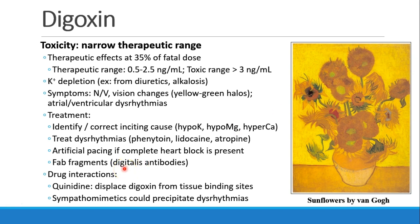If patients have digoxin toxicity, the first thing to identify is why. Are they hypokalemic, hypomagnesemic, hypercalcemic? Treat the dysrhythmias with an appropriate antiarrhythmic, whether it's phenytoin or lidocaine or atropine. They may need to be paced if they have complete heart block, and they actually have something called fab fragments, which are digitalis antibodies, and you could administer those and they will bind up the excess digoxin.